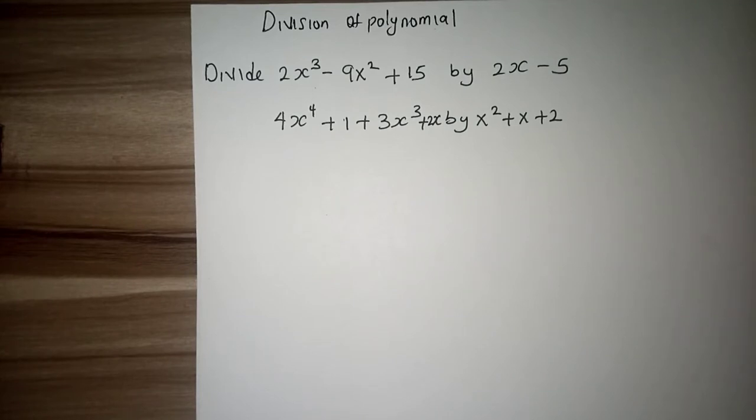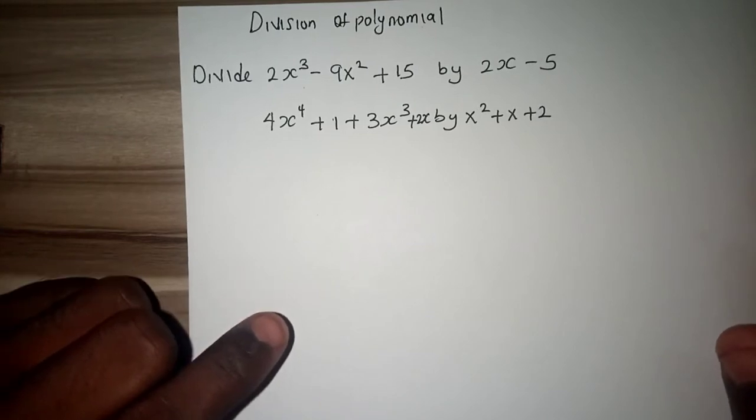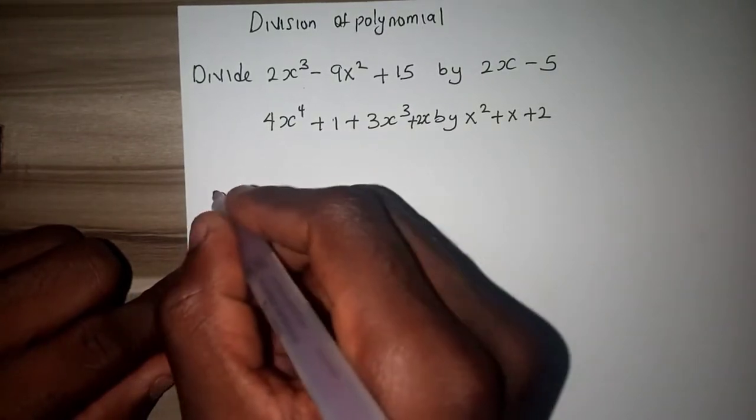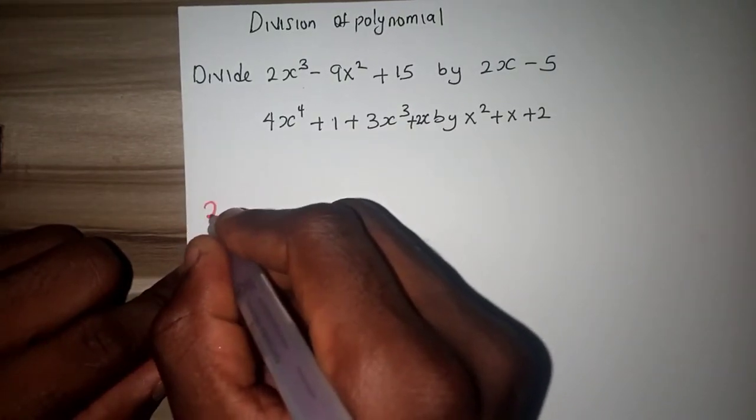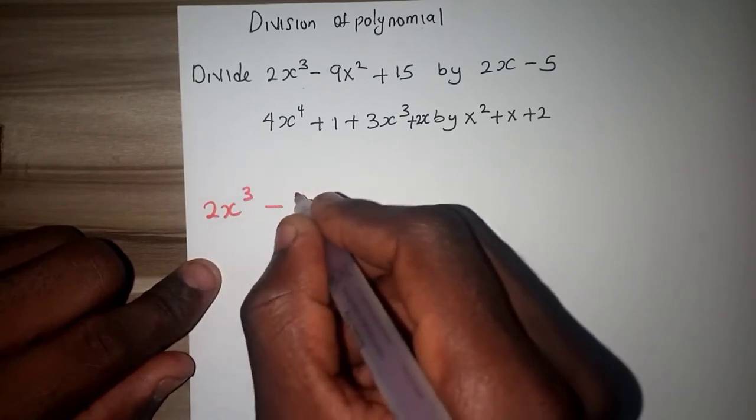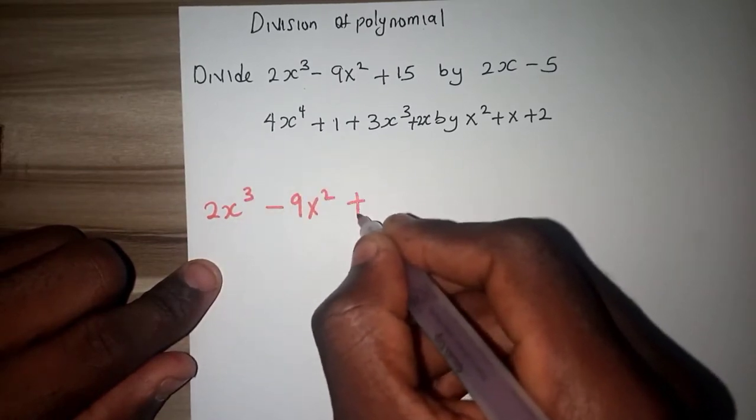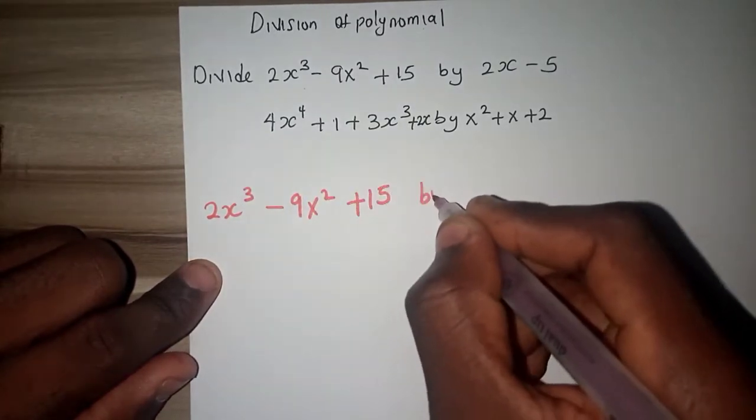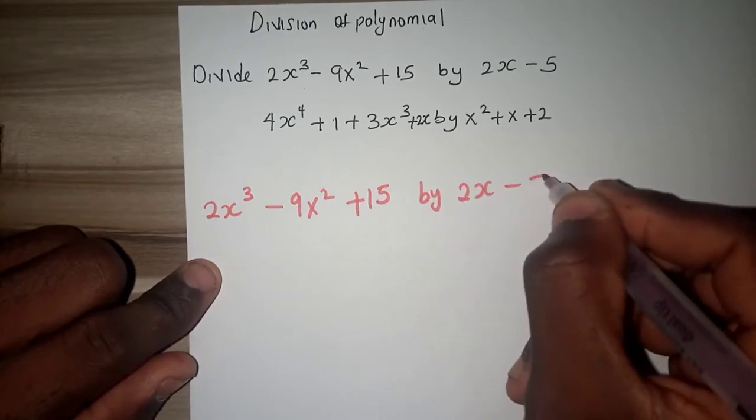This is a simple aspect of a polynomial and we are going to show some ways in which you can go about this division. Going for the first question, we have 2x cubed minus 9x squared plus 15 by 2x minus 5.